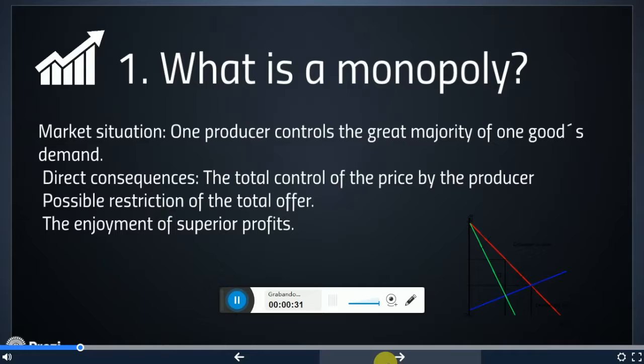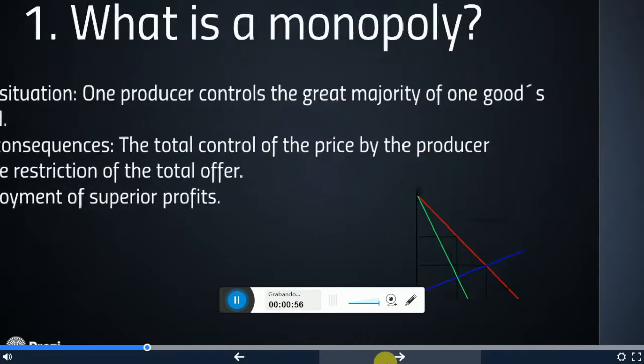This situation has direct consequences on the market, and we think that the most remarkable ones are that the price is controlled by the producer. It is because there are no competitors who can influence the price. The producer can restrict the total offer, and he has superior profits compared to other markets.